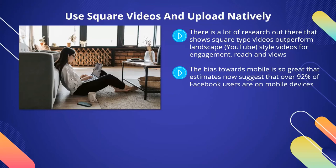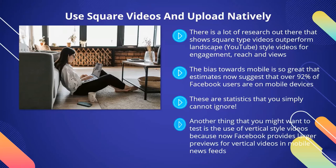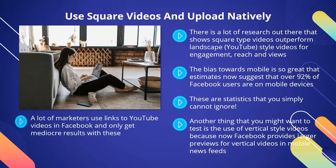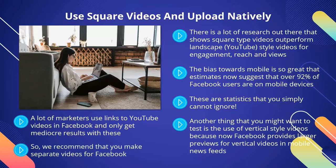More than half the video views on Facebook happen on a mobile device, and a square style video takes up almost 80% more real estate in mobile news feeds — statistics that you simply can't ignore. Another thing that you might want to test is the use of vertical style videos because now Facebook provides larger previews for vertical videos in mobile news feeds. Making videos that work well in Facebook is much easier now with online tools such as InVideo and Animoto available. A lot of marketers use links to YouTube videos in Facebook and only get mediocre results. The truth is that the interaction rate with Facebook native videos is far higher. The term native means a video uploaded directly to Facebook. We recommend that you make separate videos for Facebook.